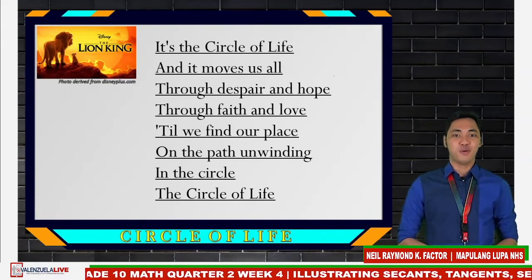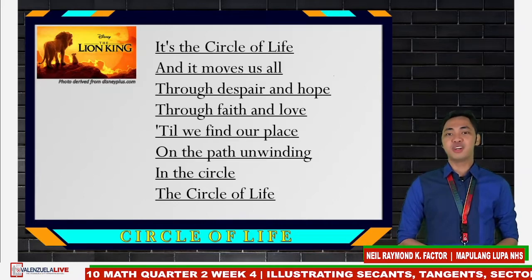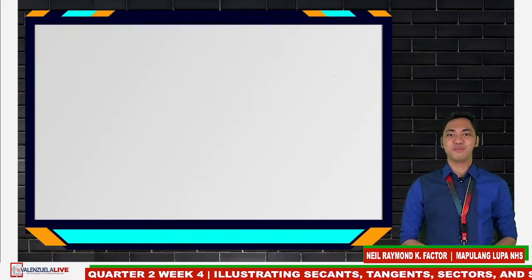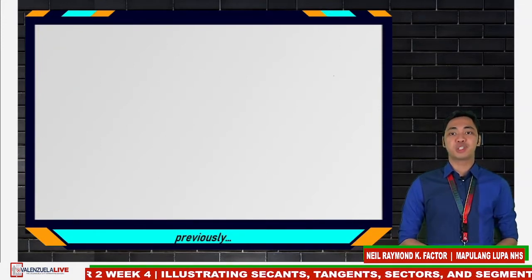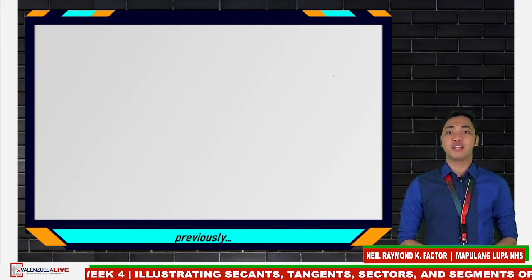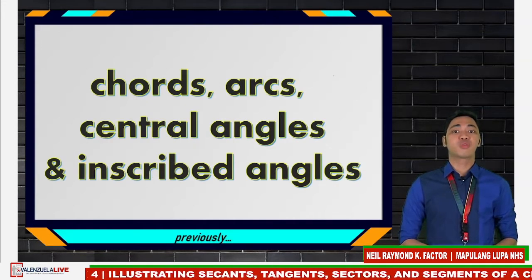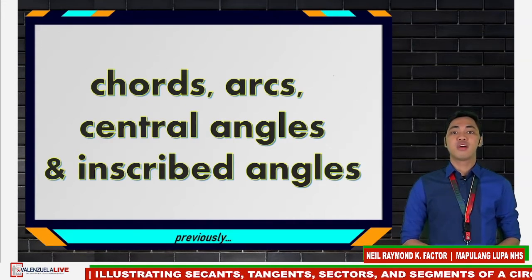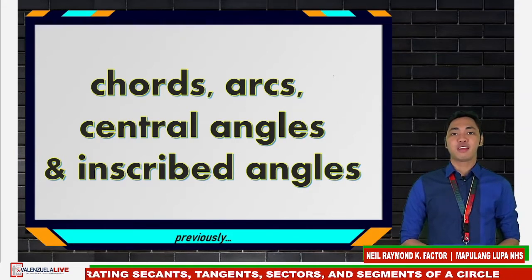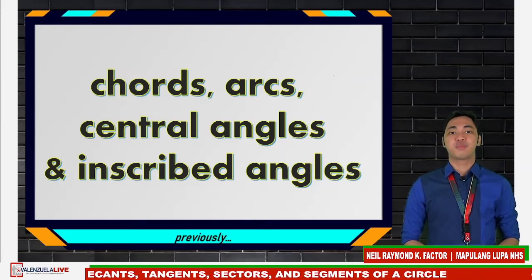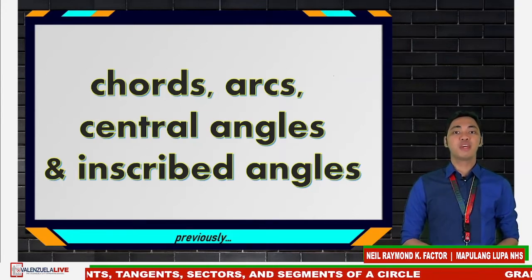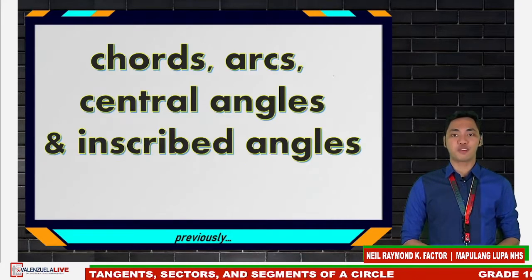So let us enjoy this discussion that we are having at the moment. Last sessions, you had an in-depth discussion of the first few terms related to the circle: chords, arcs, central angle, and inscribed angle, and of course some theorems related to these. For today, we will be illustrating other parts of the circle.